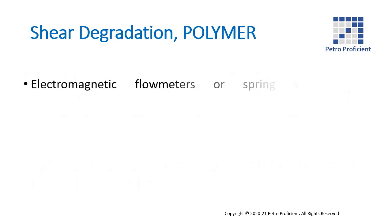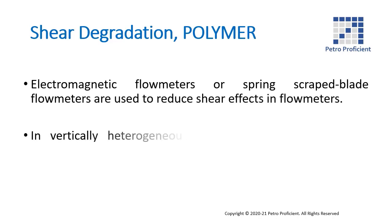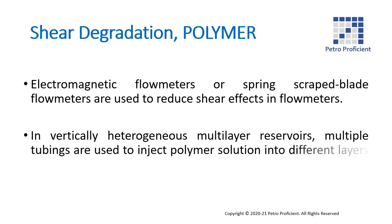Electromagnetic flow meters, or spring-scraped blade flow meters, are used to reduce shear effects in flow meters. In vertically heterogeneous multi-layer reservoirs, multiple tubings are used to inject polymer solution into different layers based on the injectivities of reservoirs.